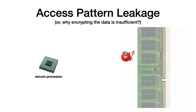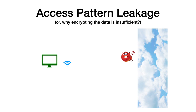So what is the problem that ORAM comes to address? Suppose we have some secure processor and an untrusted memory, or in a more modern view, suppose that we have some client that uploads this information to an untrusted server. Even if the uploaded information is encrypted, the access pattern — the memory location that the client accesses — reveals sensitive information.